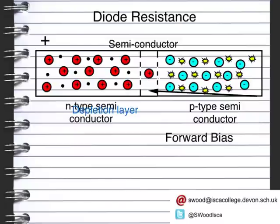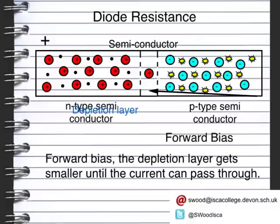To summarise: positive terminal at the N-type end — depletion layer gets bigger; positive terminal at the P-type end — the depletion layer gets smaller. If we increase the voltage under forward bias, the depletion layer gets narrower and narrower until the current can pass through. That's why you get an increase in current as you turn the positive voltage higher. As the depletion layer decreases, the holes — effectively an absence of electrons — meet up with the electrons, and that allows the current to pass through.